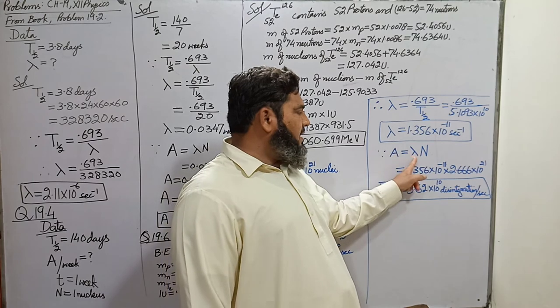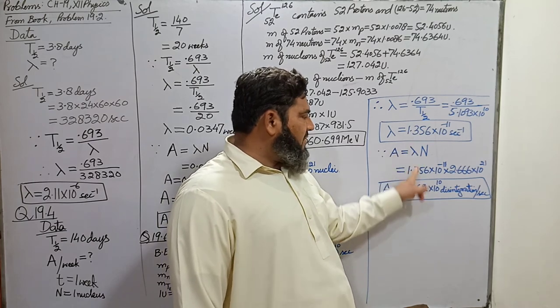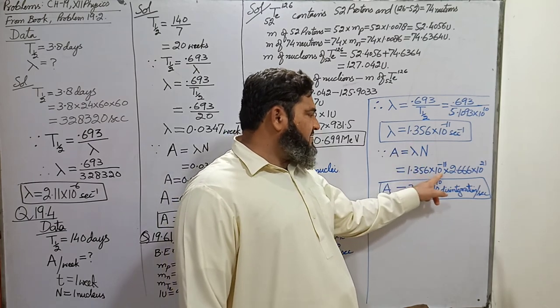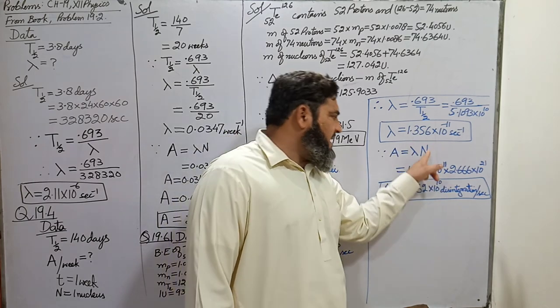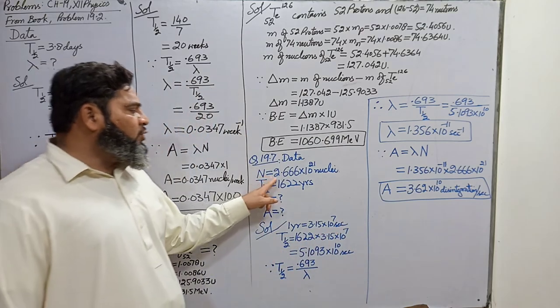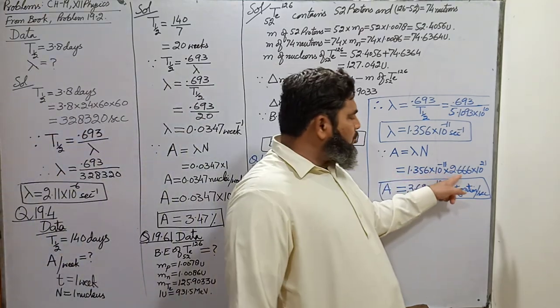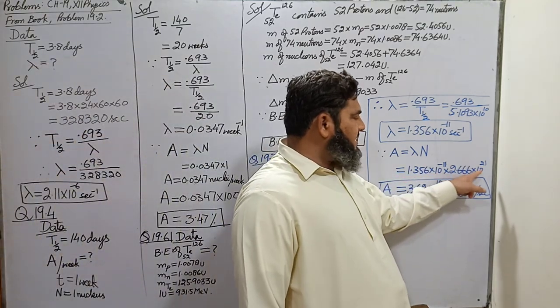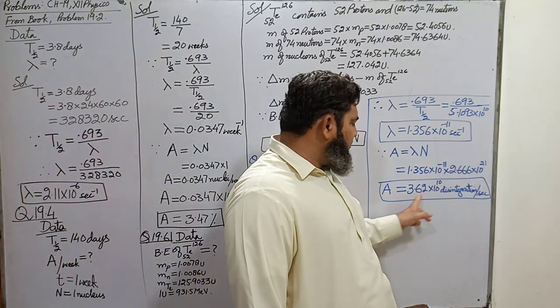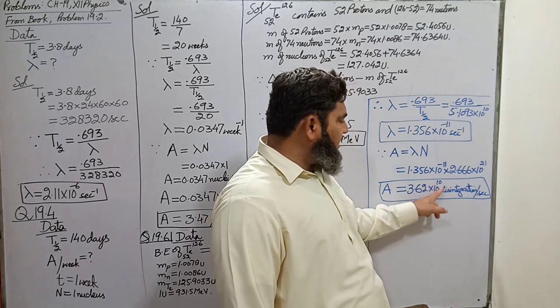Activity A = λ × N = 1.356 × 10⁻¹¹ × 2.66 × 10²¹ = 3.62 × 10¹⁰ disintegrations per second. This is how many nuclei of radium are destroyed per second in one gram.